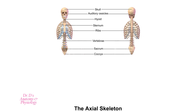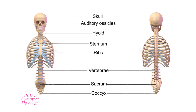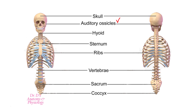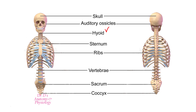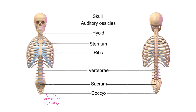Here we can see the axial skeleton highlighted. It includes the skull, the auditory ossicles — which are very tiny bones found in the temporal bone of the skull — the hyoid bone, which is not directly attached to the skeleton by any articulation but is suspended by soft tissue, and the ribcage, which includes the sternum and the ribs.